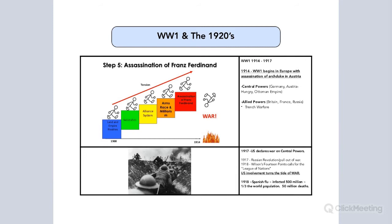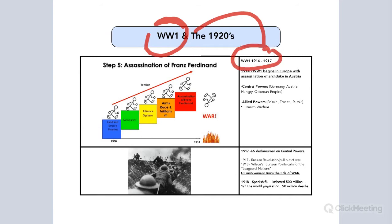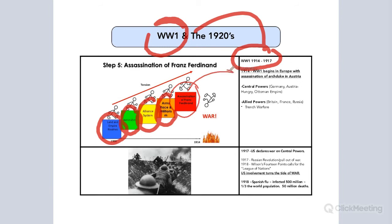And then we go into World War I. Let's mark the dates of World War I: 1914 to 1917. There are a lot of different things that led to World War I — nationalism, an arms race. But the one we're going to focus on is the assassination of Archduke Franz Ferdinand in Austria. This was the thing that broke the camel's back in terms of launching the world into World War I. We have central powers and allied powers.